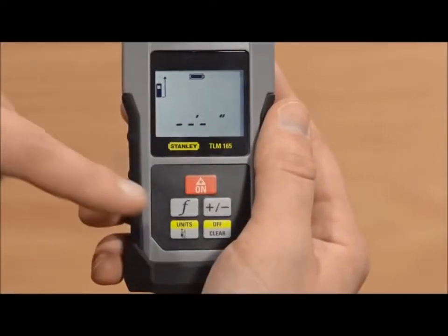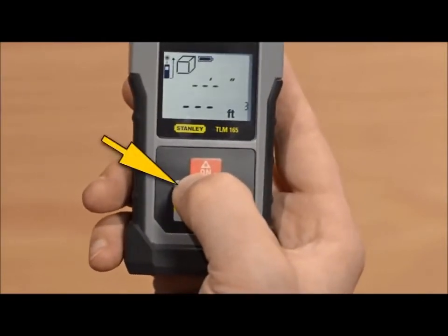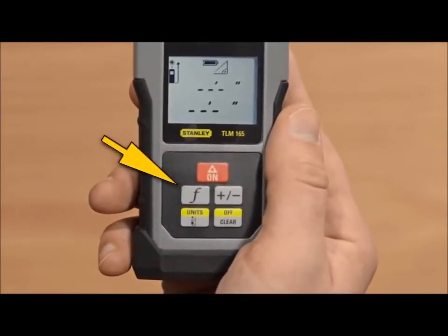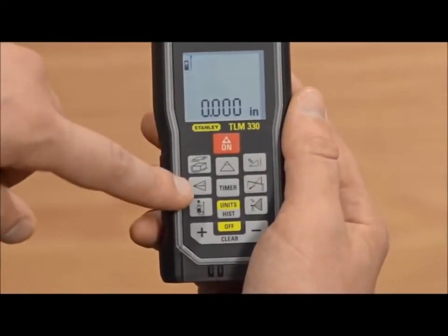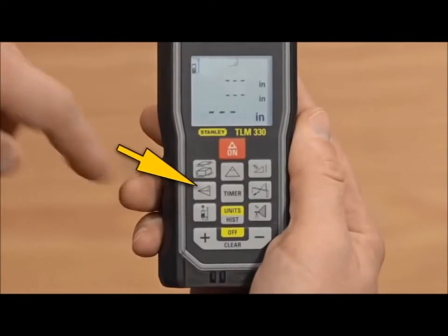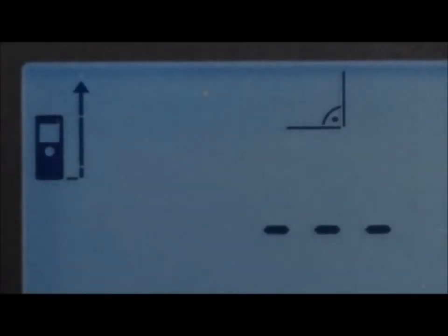To find Pythagoras 1 with the TLM-165, push the function button until you see a triangle indicating you are in Pythagoras 1 mode. For the TLM-330, push the button displaying the triangle with a line across the middle. The blinking sides of the triangle tell you which side to measure.